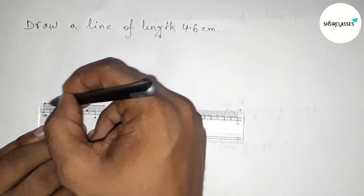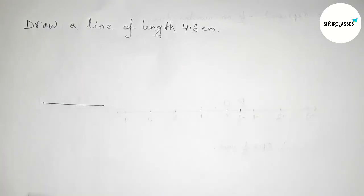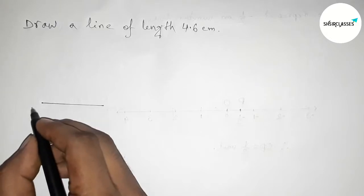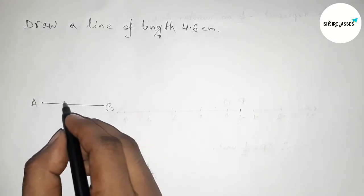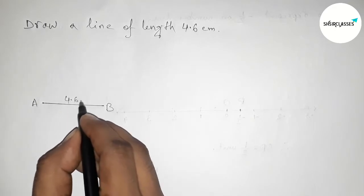Joining this line. Now taking point here A and here B, so AB is a line of length four point six centimeter.